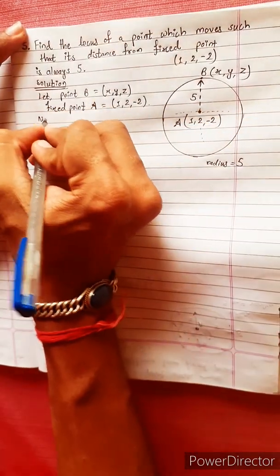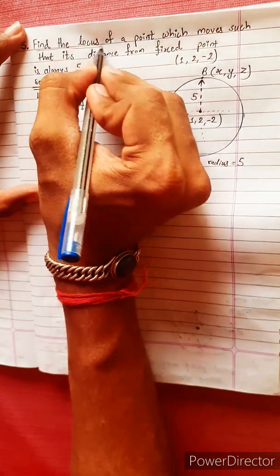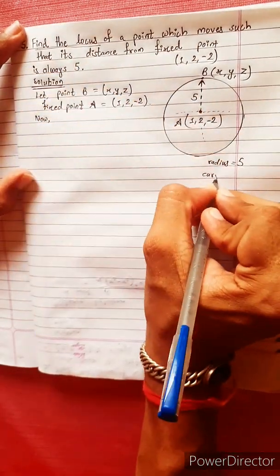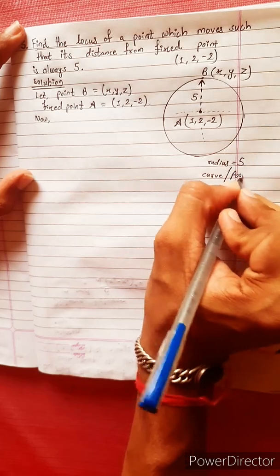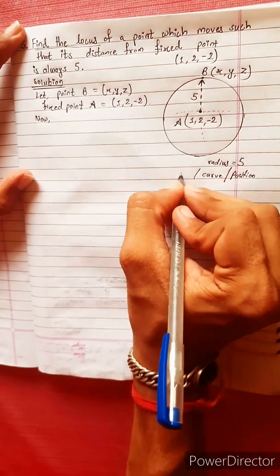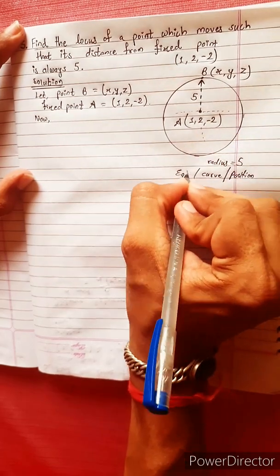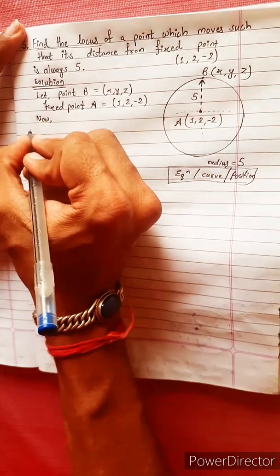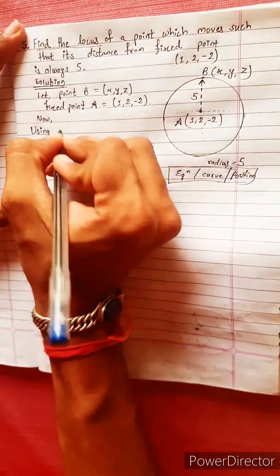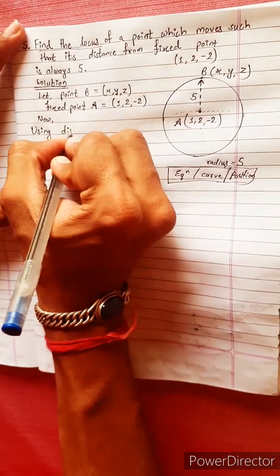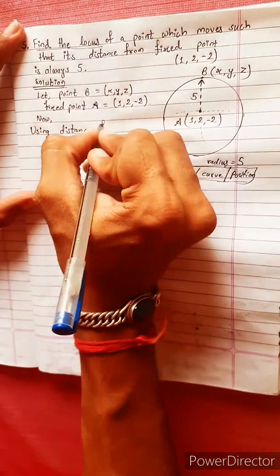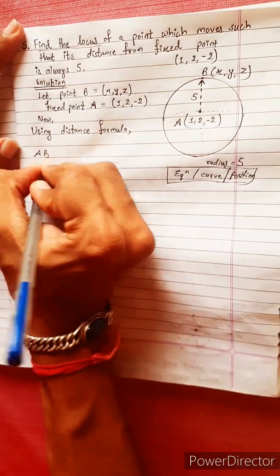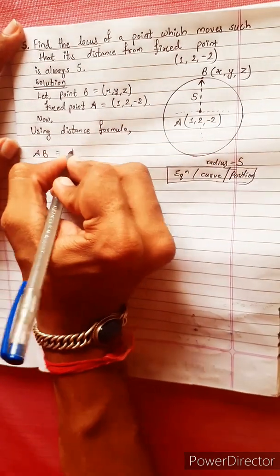Now, find the locus. The locus will become a curve — its position and equation. The locus will be found using the distance formula. This is the case of point A, B where the distance is 5 units.